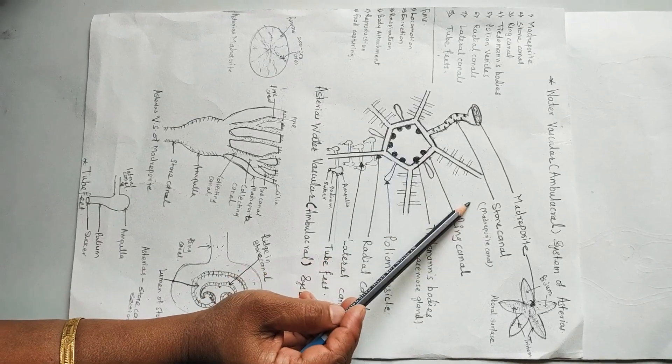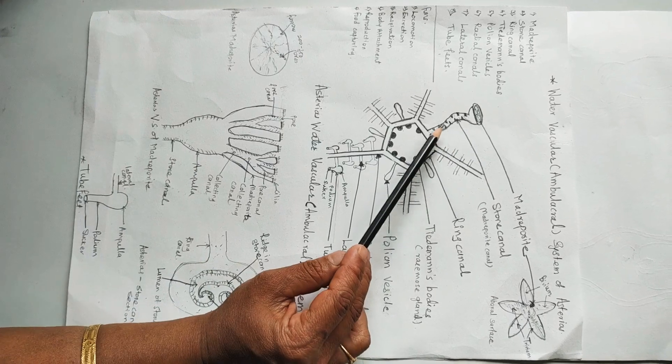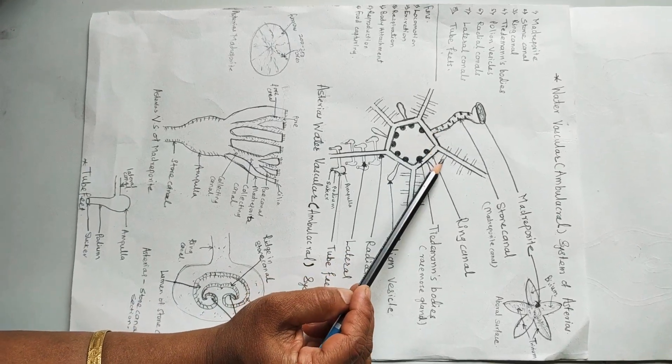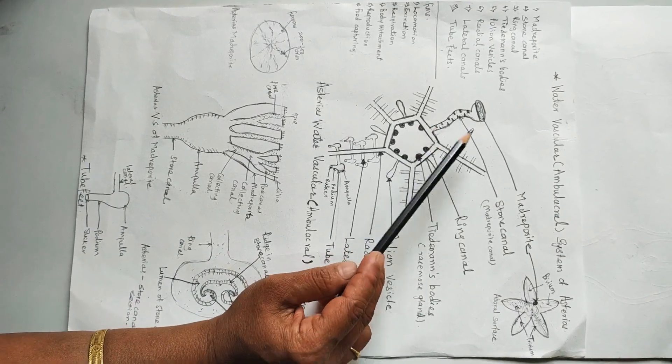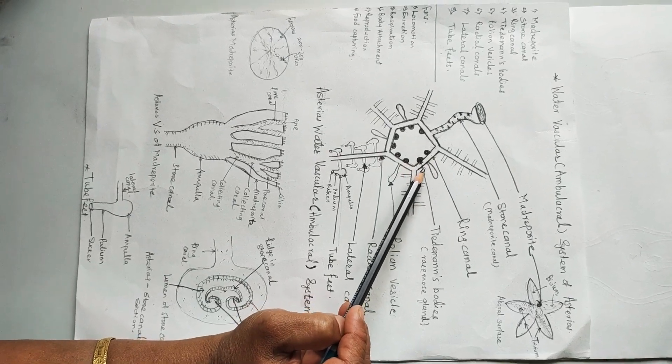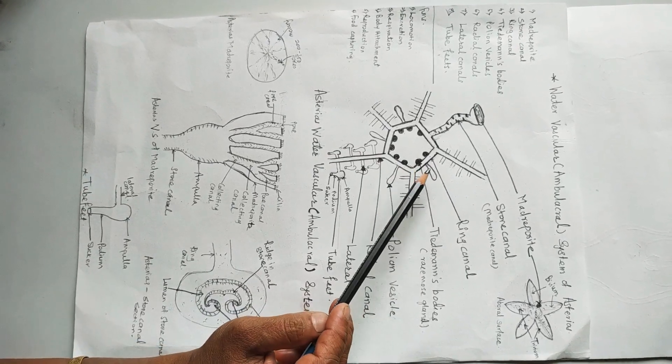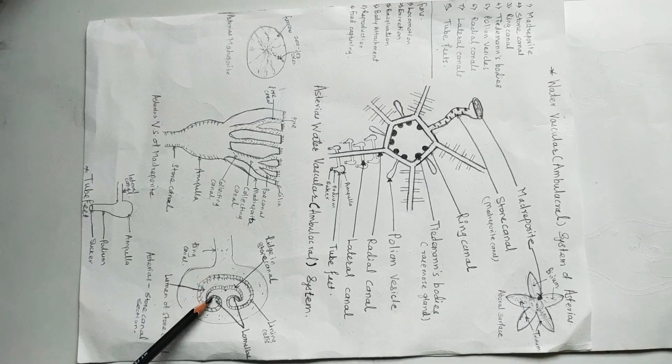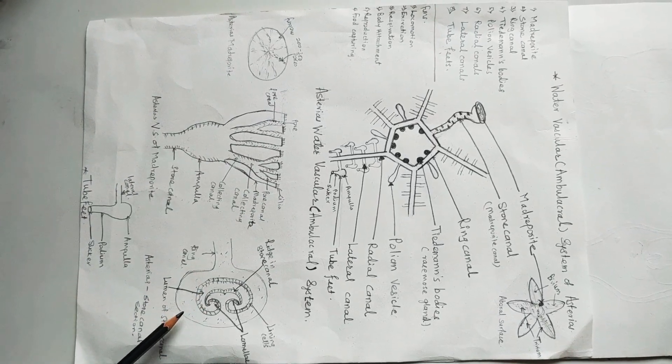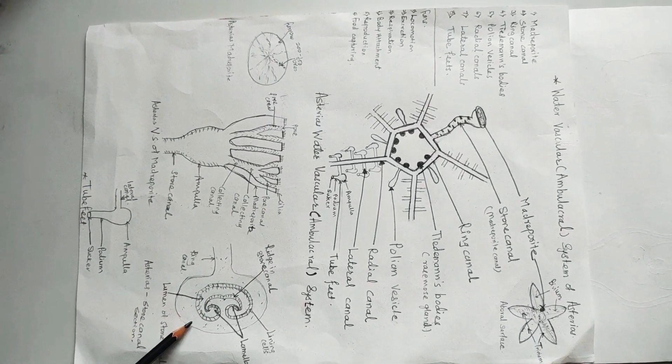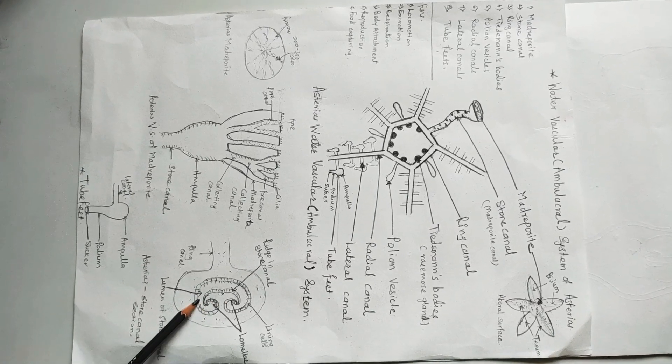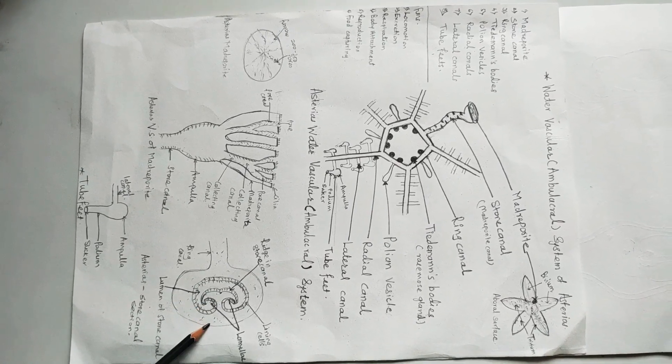The lumen of stone canal is lined by tall flagellated ciliated cells. The movement of cilia draws the water current into the canal. On one side of its wall projects into the cavity, a ridge that bifurcates into the tube lamellae which rolls spirally.